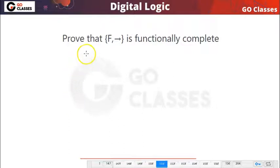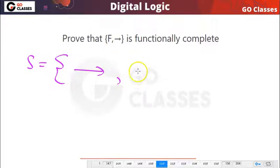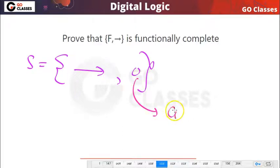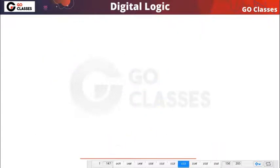Let's solve this question: implication with false is functionally complete. So basically, this is set S, and in this set S we have the implication operation and the constant false, which means zero. This implication operation with the help of constant zero is functionally complete. To prove it, we apply the guidelines to this set.